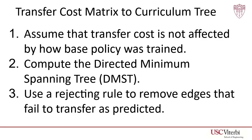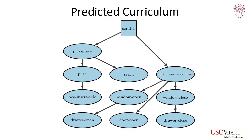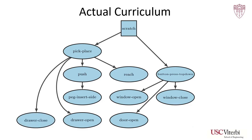Then we use a rejecting rule to remove edges that fail to transfer until we find a tree that transfers as predicted. For example, here one tree has two edges rejected, which are then replaced with the next best viable edges.